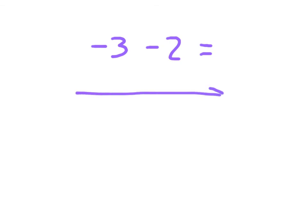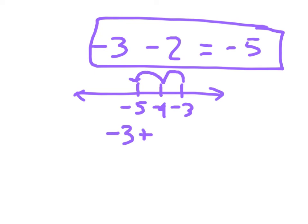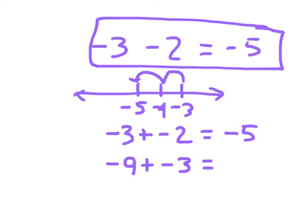Here we have negative 3 minus 2. We start at negative 3. Do we move right or left? Left — we move left 2 more. The numbers become more negative: 1, 2 — negative 5. Subtracting a number is the same as adding a negative. So negative 3 minus 2 could be expressed as negative 3 plus negative 2, which is just negative 5.